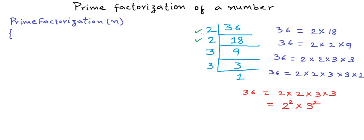Like in this example, 2 occurs twice and 3 occurs twice. Our logic would be to run a loop starting from 2, all the way till n, and for each i we will keep dividing n by i as long as we can.